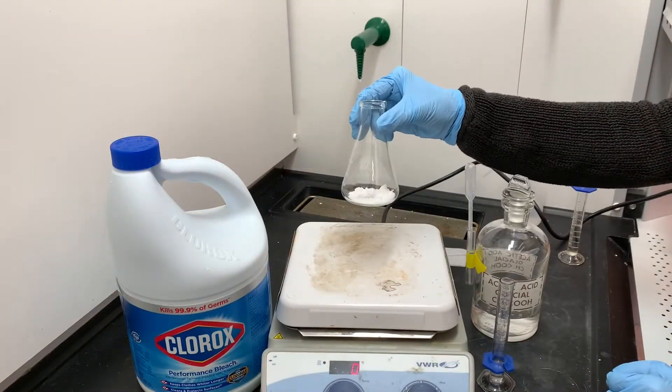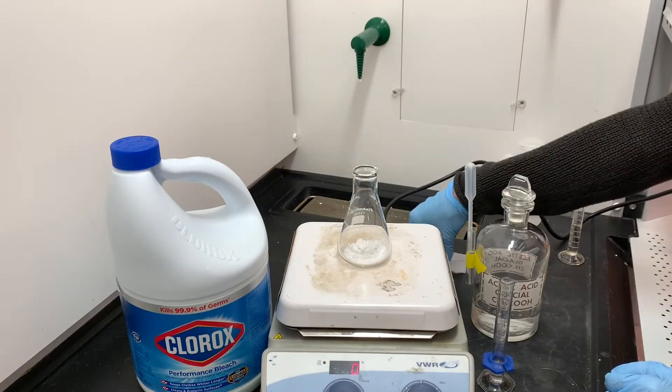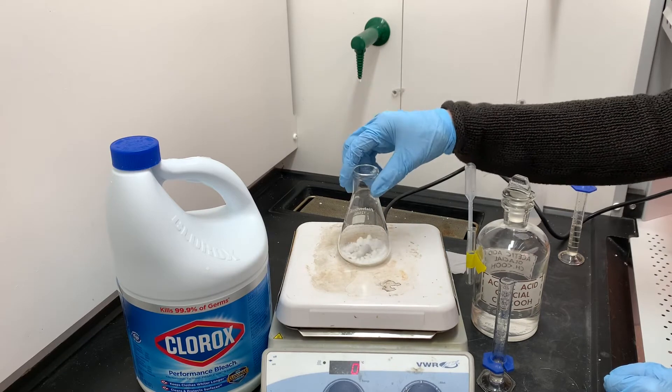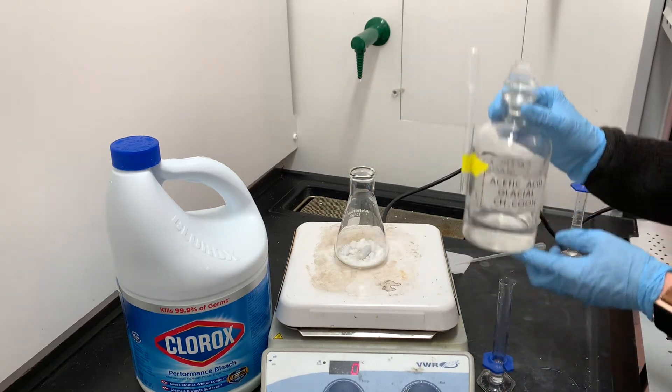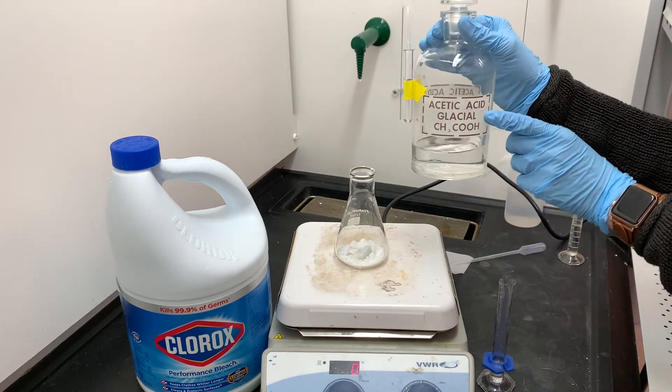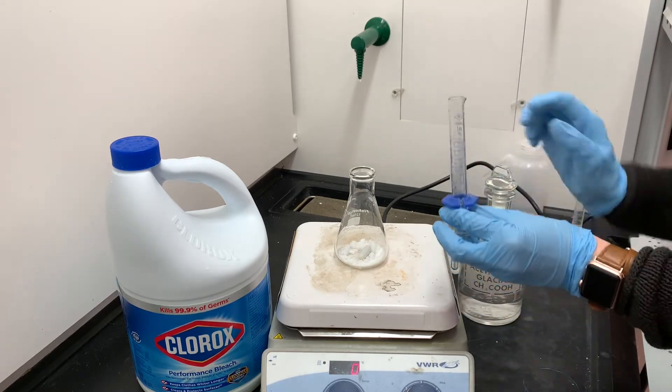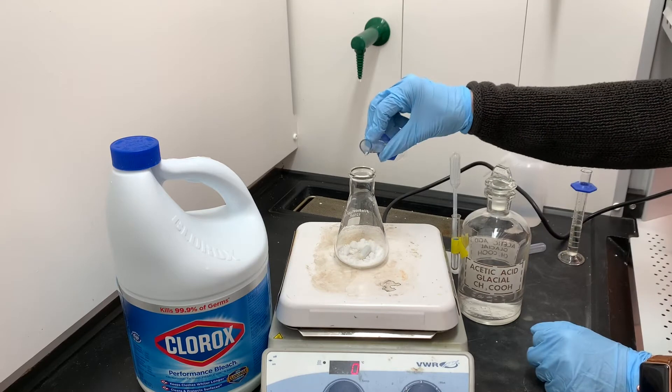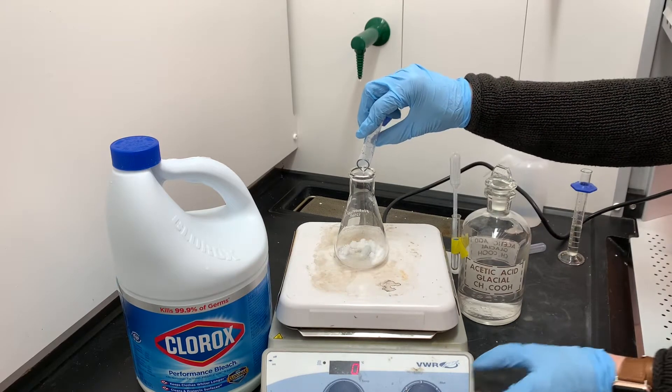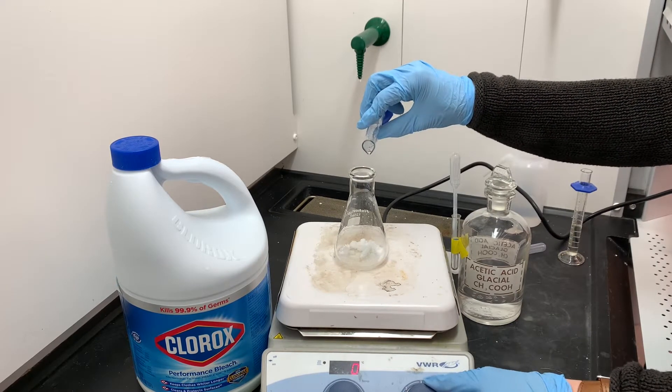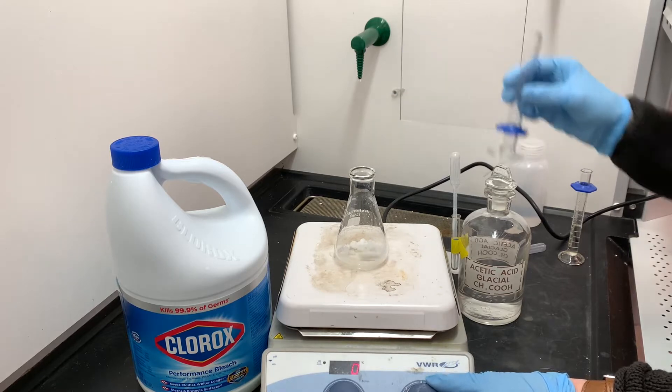I've transferred the isoborneol to this Erlenmeyer flask and I'm going to add a magnetic stirrer. The next ingredient that we'll be adding is the glacial acetic acid. Remember, glacial just simply means that it's concentrated. I've pre-measured the two milliliters of glacial acetic acid and I'll add that now, and then we'll start the magnetic stirrer to start getting this stuff mixing together.